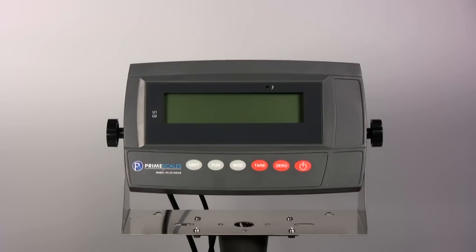Here I want to introduce the PS-IN100 indicator. This indicator has four versions: plastic housing with LED display, plastic housing with LCD display, stainless steel housing with LED display, and stainless steel housing with LCD display. The one shown in the picture is plastic housing with LCD display.